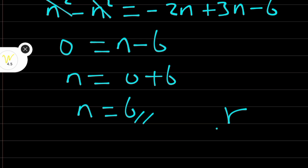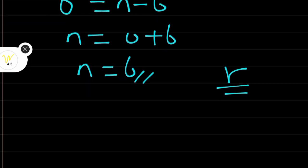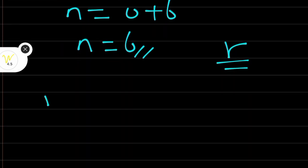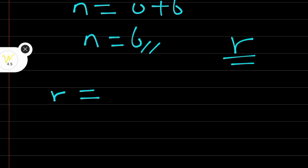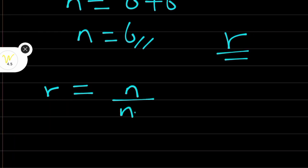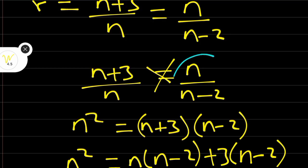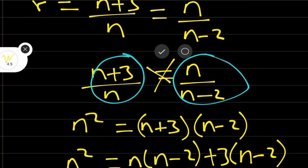But we have to find the common ratio. And don't forget that our common ratio is equal to n over n minus 2. I am using this particular expression.